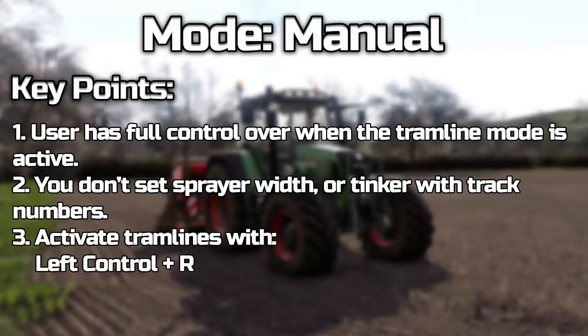We have now covered the user interface and we're going to move on to the modes, of which there are three different types — three different ways of being able to put tramlines in. We'll start with the manual mode.